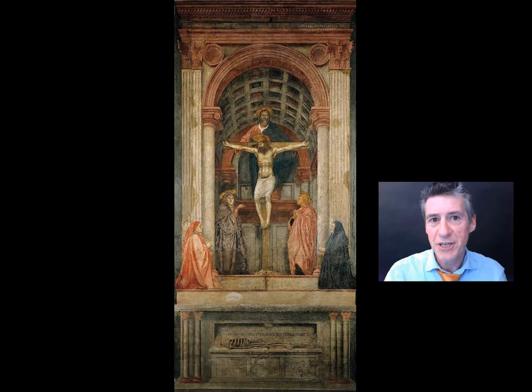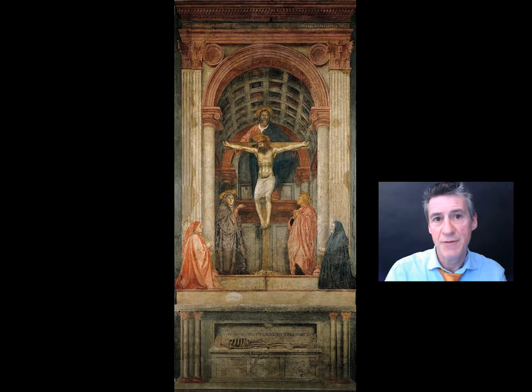As we can see, Masaccio has created an illusion here. The illusion is that there's another space beyond the wall of the church. The space has architectural qualities — it has a vaulted ceiling and columns. Within that space, we see Jesus rising up to the arms of God the Father after the crucifixion.